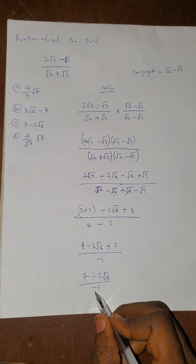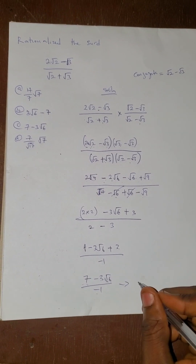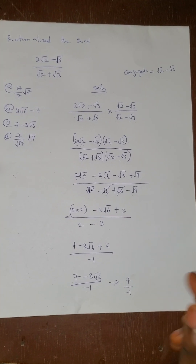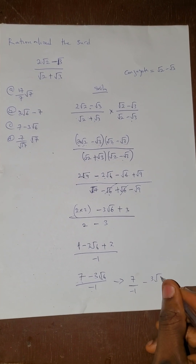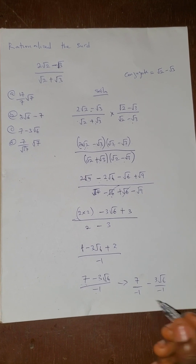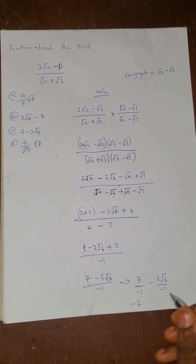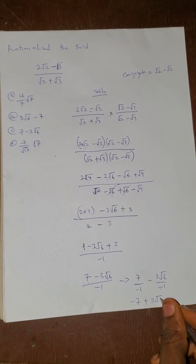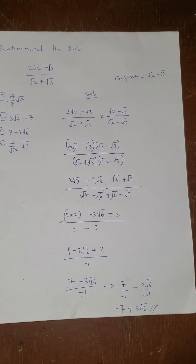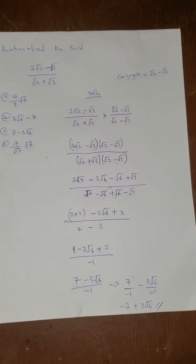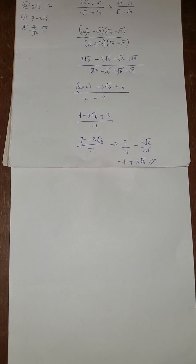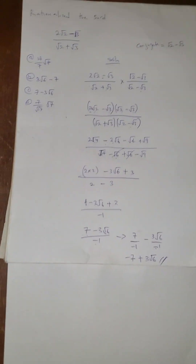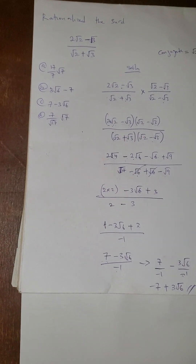We can divide both numerator and denominator by the denominator. So this becomes 7 over minus 1 minus 3√6 over minus 1. Minus divided by minus is plus, so we get minus 7 plus 3√6 as the final answer.